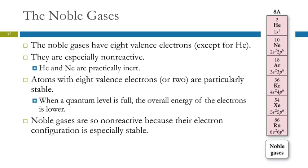Let's look at the noble gases in group 8. These elements have eight valence electrons, except for helium, which only has two valence electrons, but that is full for the first level. The noble gases are especially non-reactive. Helium and neon really don't make compounds because these atoms are especially stable. They don't need to interact with other atoms to make lower energy molecules or ions. When you've got a quantum level that's full, the overall energy of the electrons is lower. Noble gases are non-reactive because their electron configurations are extra stable.